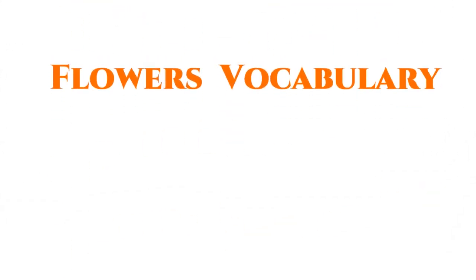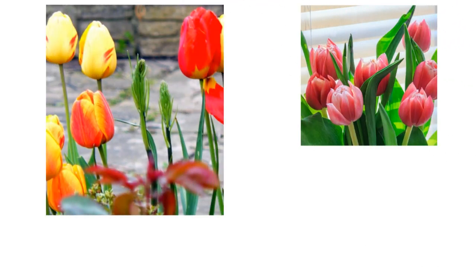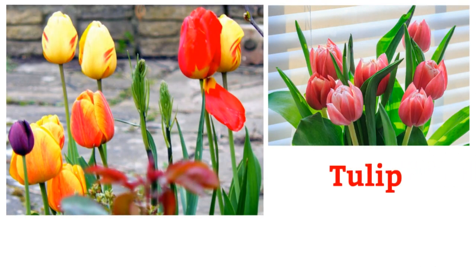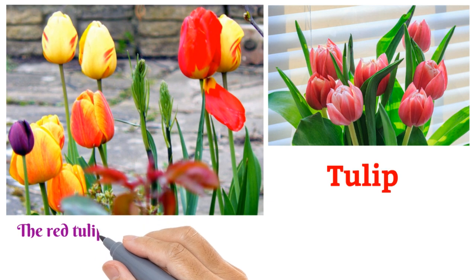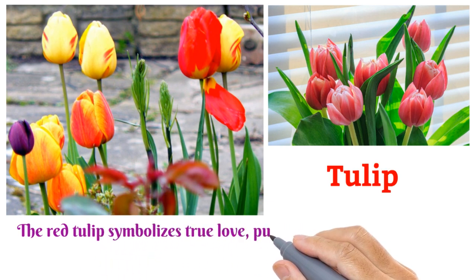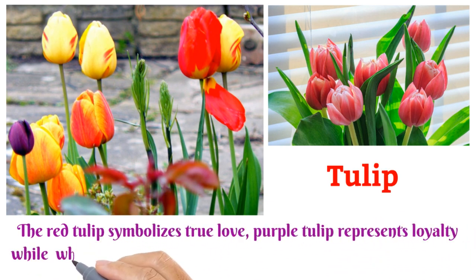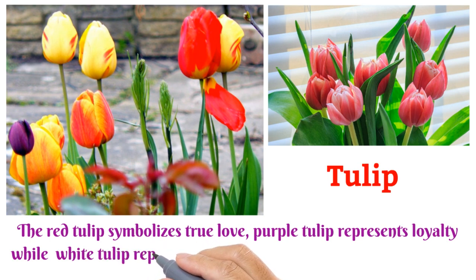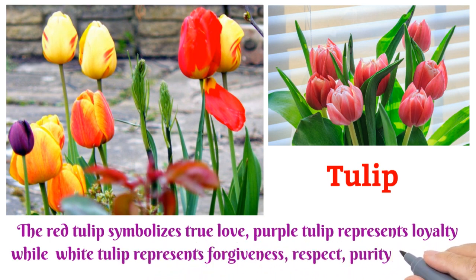Flowers vocabulary, part two. Tulip: the red tulip symbolizes true love, purple tulip represents loyalty, while white tulip represents forgiveness, respect, purity, and honor.